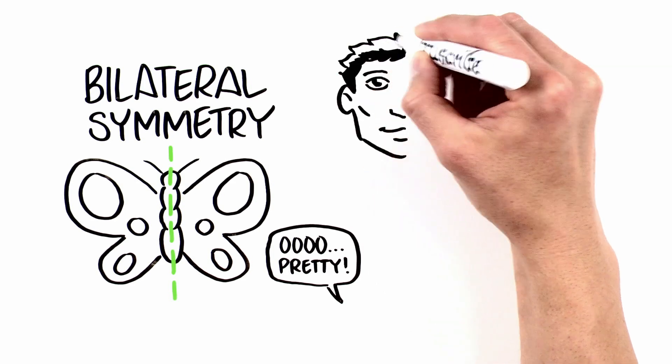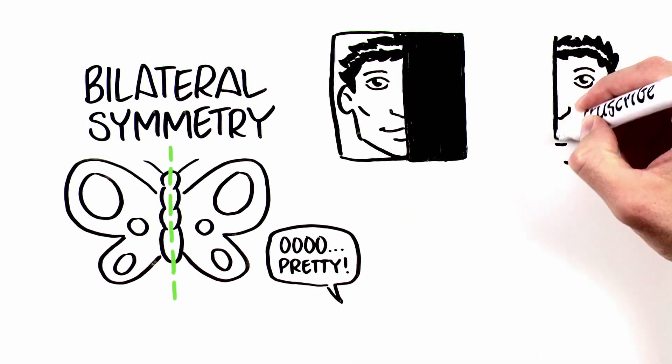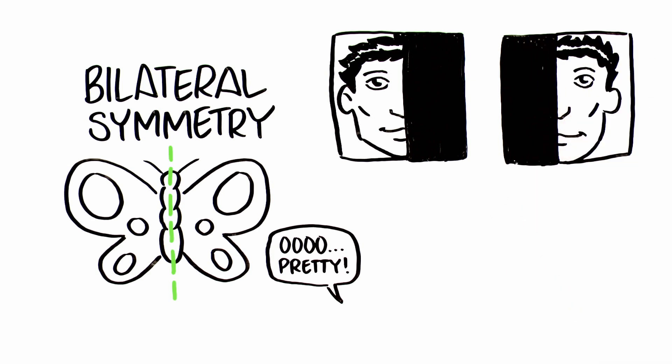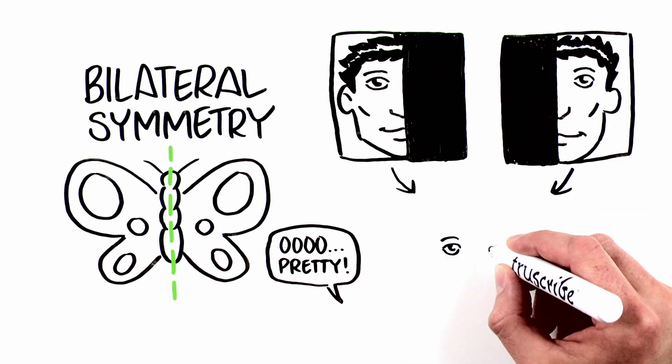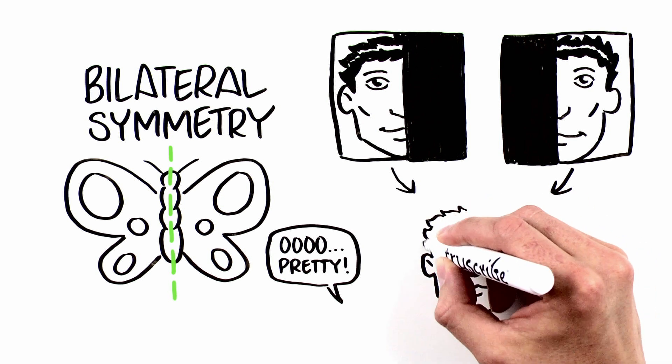Cover up the right half of your face and take a photo of the left half. Now switch and cover up the left half and take a picture of the right half. Compare the photos. Are they similar? Do your eyes line up exactly? Is one side of your nose shaped the same as the other side?